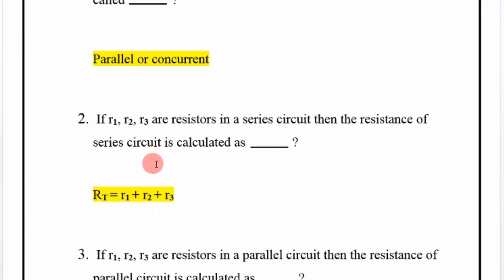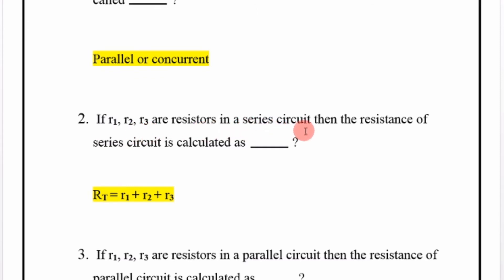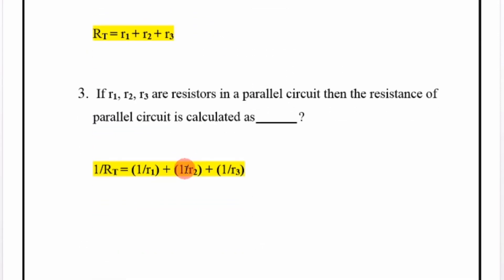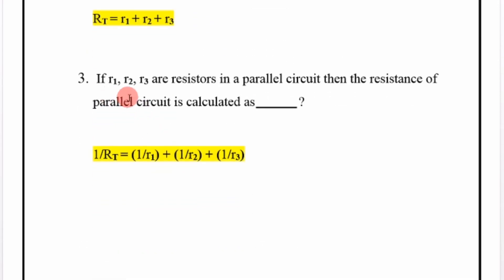If R1, R2, R3 are resistors in a series circuit, then the total resistance of the series circuit is calculated as: RT is equal to R1 plus R2 plus R3.